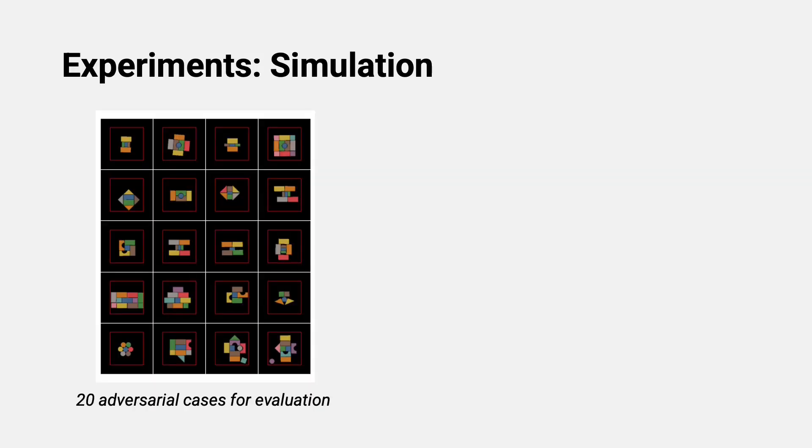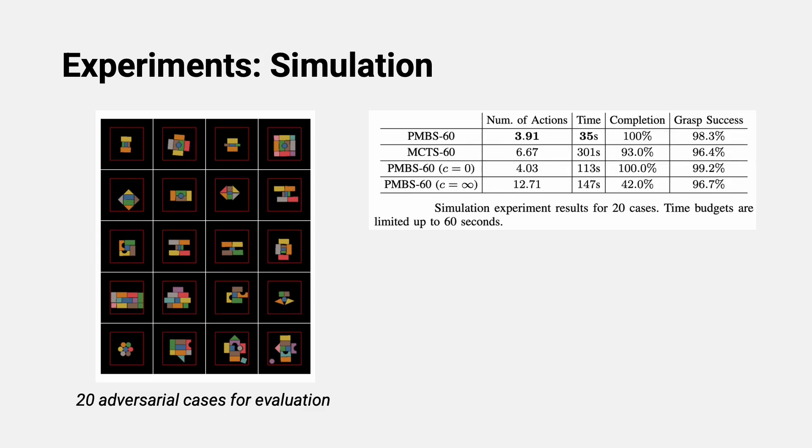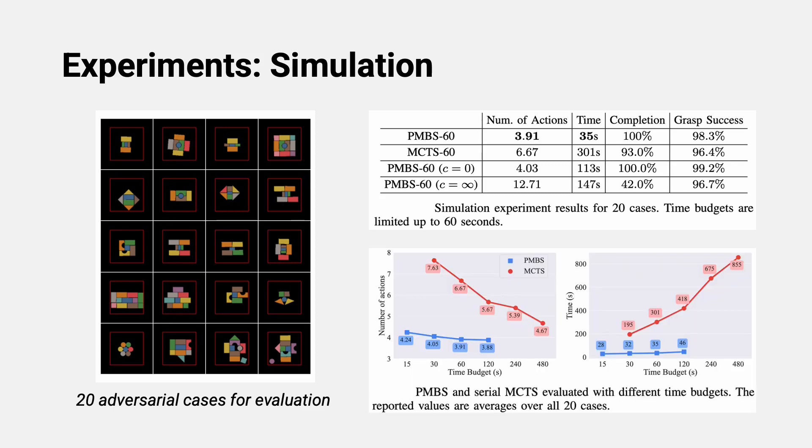We evaluate using 20 adversarial cases as shown. The center of any object cannot go outside the red borders, making the problem highly challenging. Compared with serial MCTS, our method achieved 30 times speedup. On average, our method uses about 9 seconds to decide one move. This is close to being real-time since each action takes about 5 to 10 seconds to execute. More computation time results in more optimal solutions.